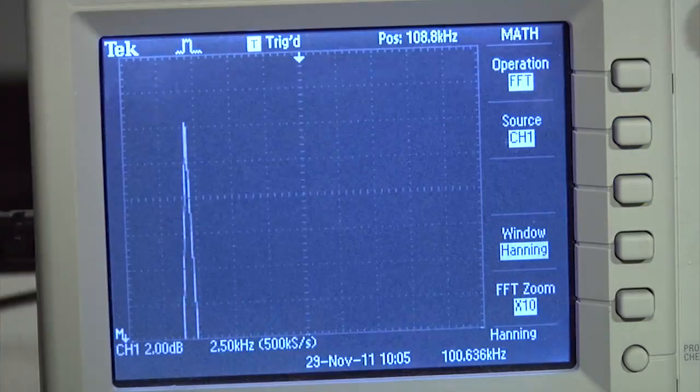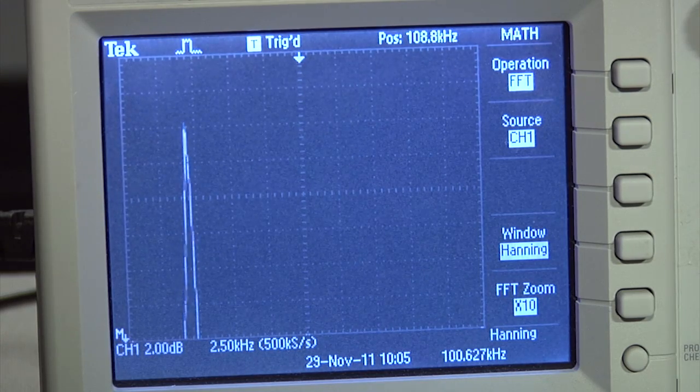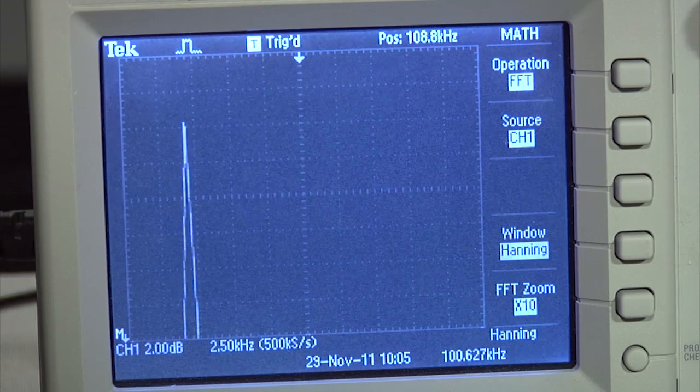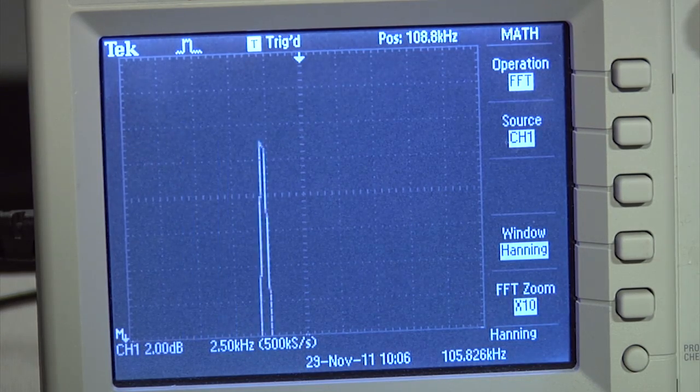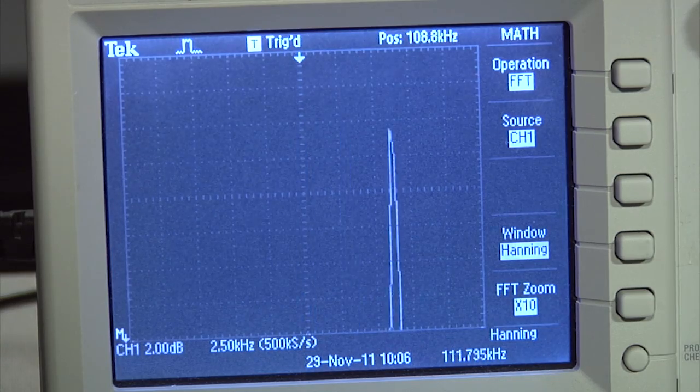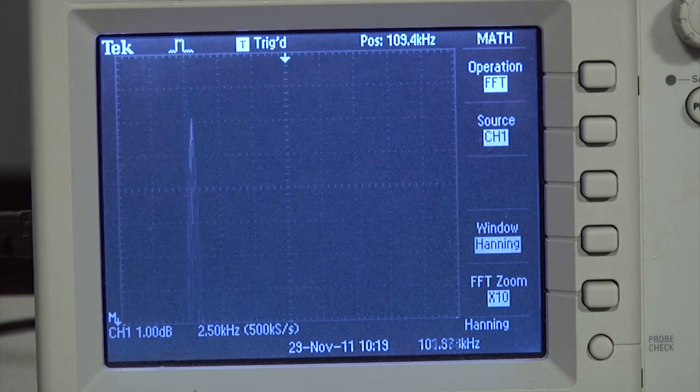First, let's do a sweep across the frequency range of 100kHz to 120kHz using the PWM. As you notice, there are approximately six or seven steps through this range using the PWM.